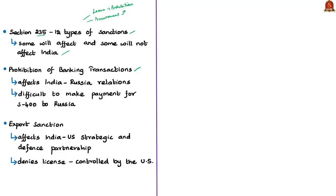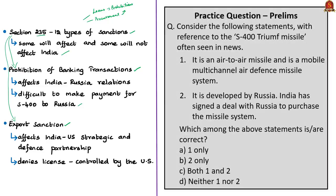Section 231 of CAATSA requires the President to impose five or more sanctions described in Section 235, which lists 12 types of sanctions. Many will have little impact on India's relations with Russia or USA. However, key impactful sanctions include prohibition on banking transactions — making it difficult for India to pay in US dollars to Russia's military export organization — and export sanctions, which have the potential to completely derail the India-US strategic and defense partnership by denying export licenses for items controlled by the US.